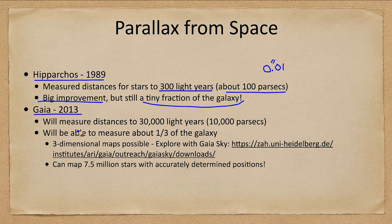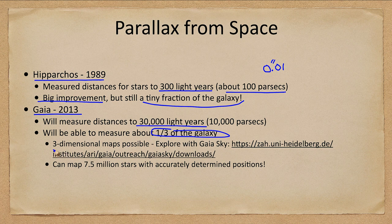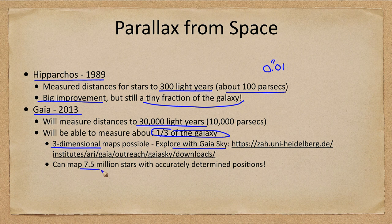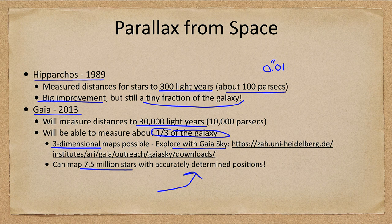Gaia in 2013 is measuring distances out to 30,000 light years, nearly a third of the size of our galaxy. And we can now start to make three-dimensional maps of our galaxy from these measurements. You see the link here where you can actually go look at this data. It will be able to map seven and a half million stars with accurately determined positions. We will see that this is very important. Parallax is our first step in the distance ladder to determine distances to other stars and eventually to galaxies. So it needs to be accurate because other methods will build upon this.